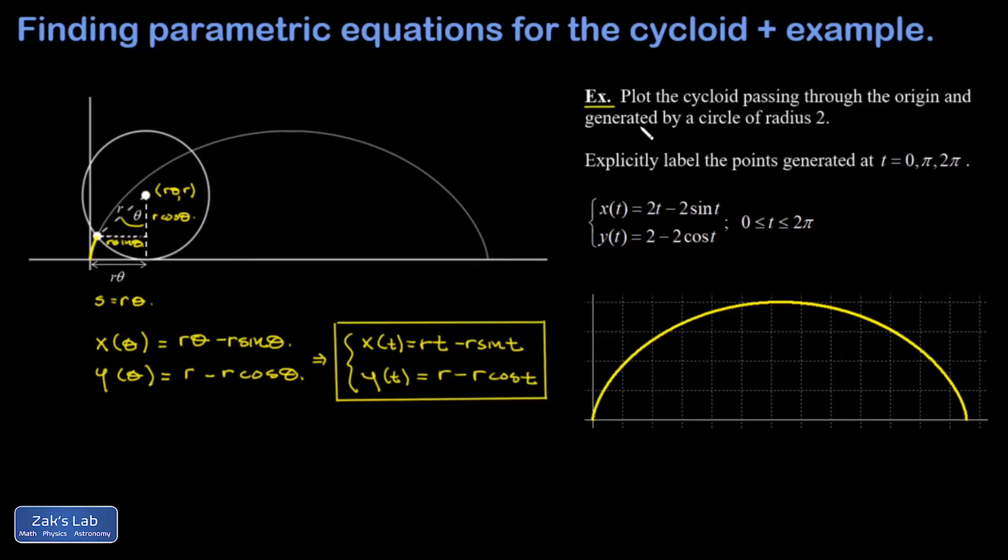In our example, we're just plotting a cycloid curve given the parametric equations for it. The idea was to use some plotting software for this, so that's already been done at the bottom. I've shown the equations here as x(t) = 2t - 2sin(t), y(t) = 2 - 2cos(t). In other words, this was generated by a circle of radius 2.